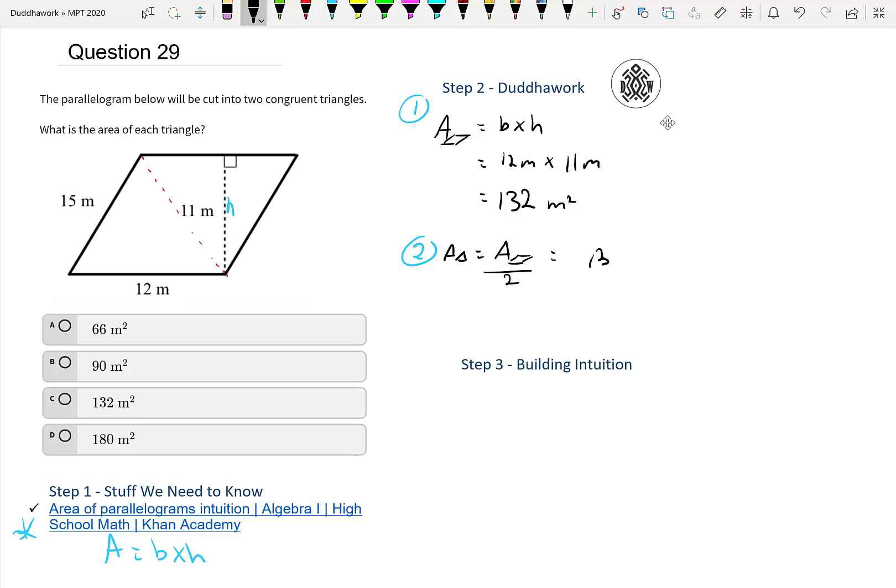the area of each triangle is the area of the parallelogram divided by two. So it's 132 meters squared divided by two. And that's, it's not 70. It's between 60 and 70, right? So it's 65, 66, I think. 66 meters squared. And that is choice number A.